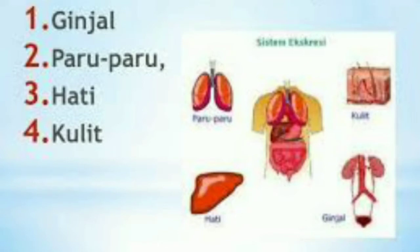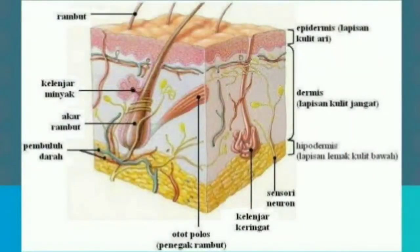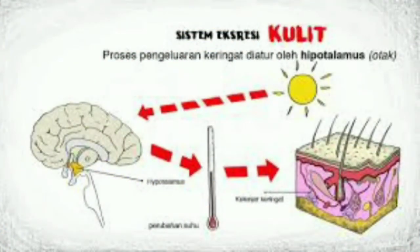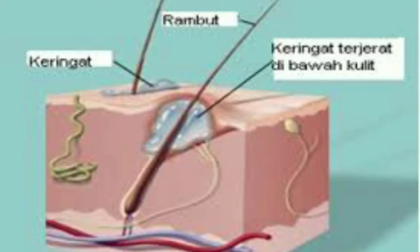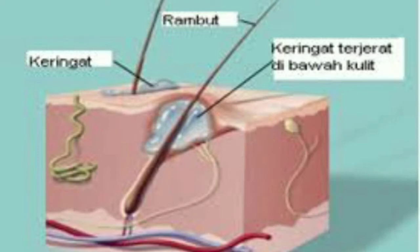Sistem ekskresi melibatkan organ-organ tubuh, salah satunya adalah kulit. Peran kulit dalam sistem ekskresi yaitu kulit mengeluarkan keringat sebagai salah satu cara untuk mengeluarkan sisa metabolisme tubuh. Keringat sendiri diproduksi oleh kelenjar keringat dan berfungsi untuk mendinginkan tubuh saat kita kepanasan. Di dalamnya bukan saja ada air, tetapi juga ada minyak, gula, dan garam, serta limbah hasil metabolisme seperti amonia dan urea yang diproduksi oleh hati dan ginjal ketika tubuh memecah protein.